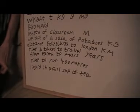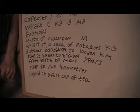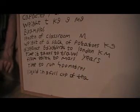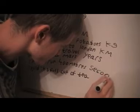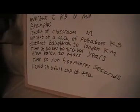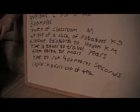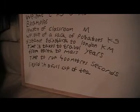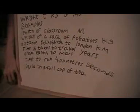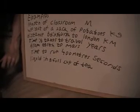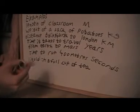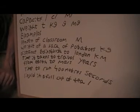For the time to run 400 meters — 400 meters isn't actually too far, so you could basically put seconds for that. If you can run really fast you should possibly be able to do 400 meters in a few seconds, or depending on your speed, it could be minutes. And the last one — liquid in a full cup of tea — that would be measured in centiliters or milliliters, as those are the more appropriate smaller units for that amount.